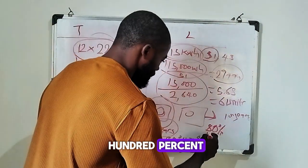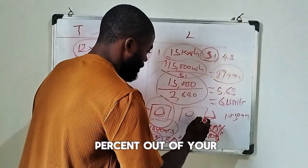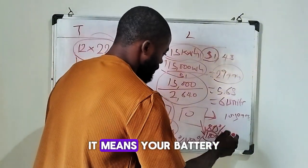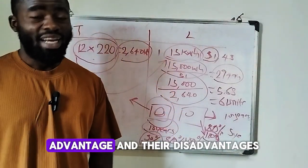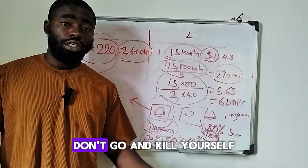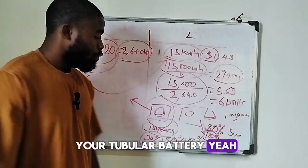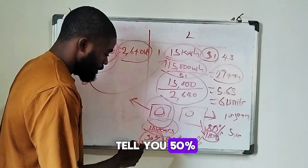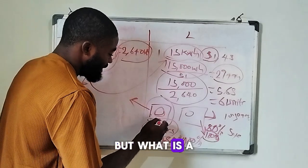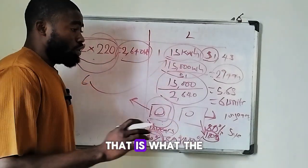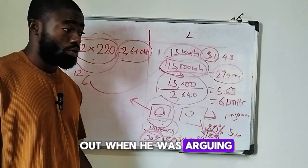The same thing applies to lithium batteries. Most lithium batteries in the market will tell you to use 80% DoD if you want to get 10 years from your battery. The reason they don't say 100% is that using 100% will result in your battery lasting only about five years. These trade-offs have their own advantages and disadvantages, so don't stress yourself if you can't afford a lithium battery — you can still enjoy your tubular battery.